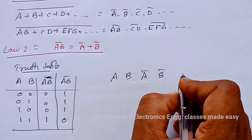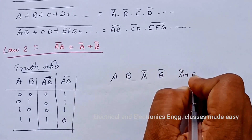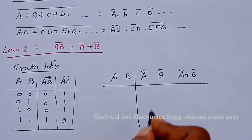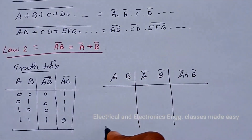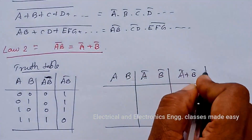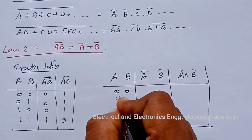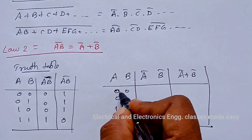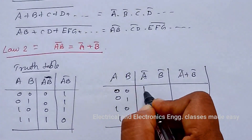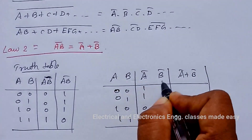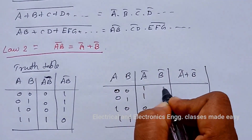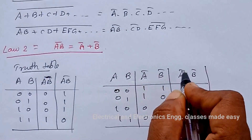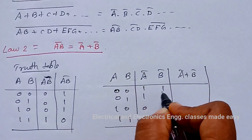For A bar plus B bar, with inputs 0,0; 0,1; 1,0; 1,1: A bar is 1, 1, 0, 0 and B bar is 1, 0, 1, 0. So A bar plus B bar gives: 1, 1, 1, 0.